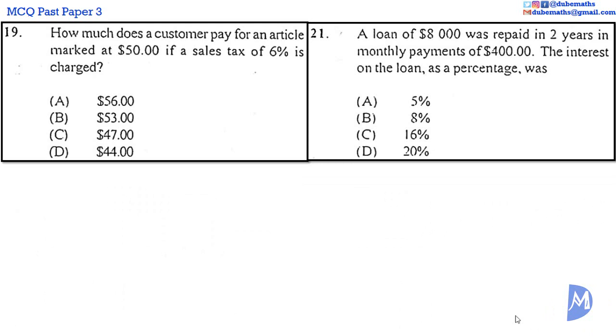Multiple choice questions usually repeat. We have seen questions 19 and 21 before. The working was shown in prior videos. The link to those videos are in the description below. The answers to questions 19 and 21 are B and D, respectively.